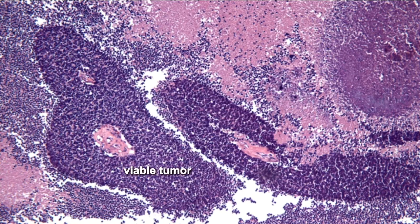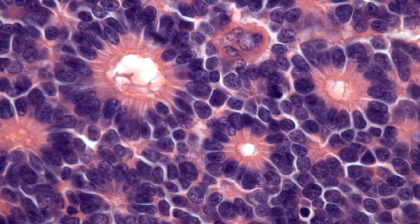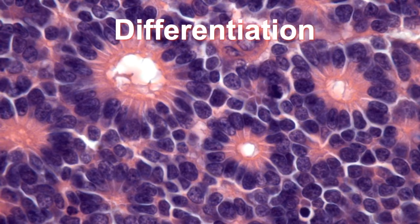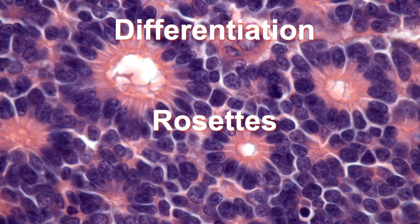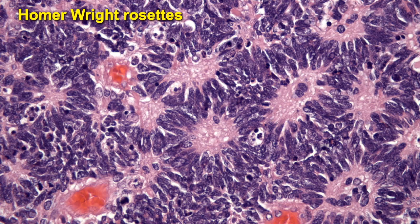The necrotic tumor cells lose their DNA and become eosinophilic, and dystrophic calcification occurs in the areas of necrotic tumor. Retinoblastoma shows varying degrees of retinal differentiation, evident as two types of rosettes and photoreceptor differentiation or floret formation.